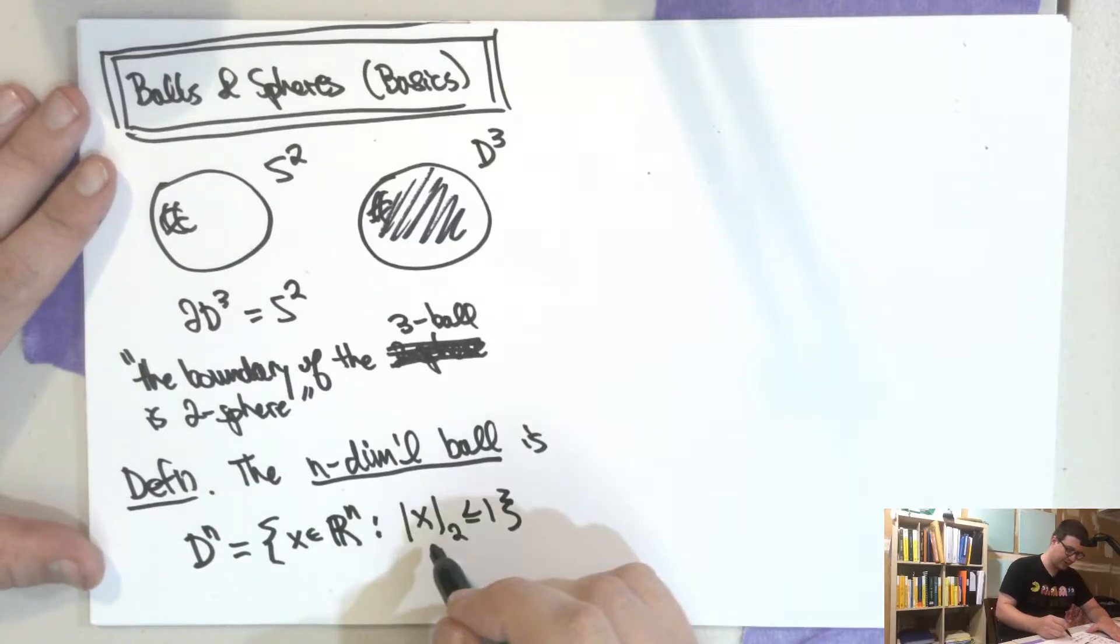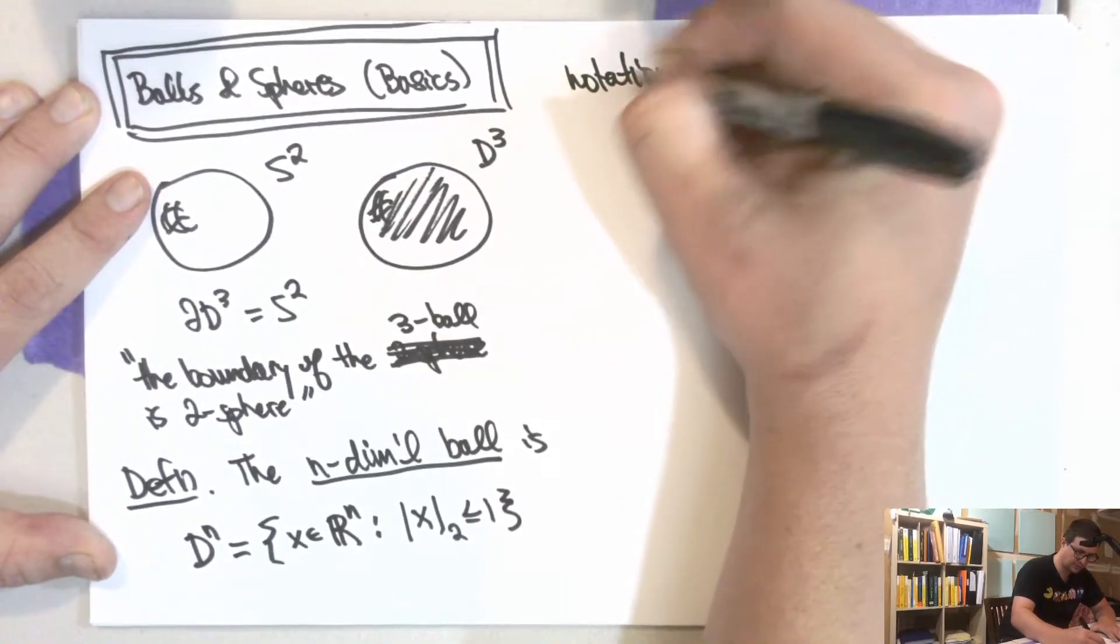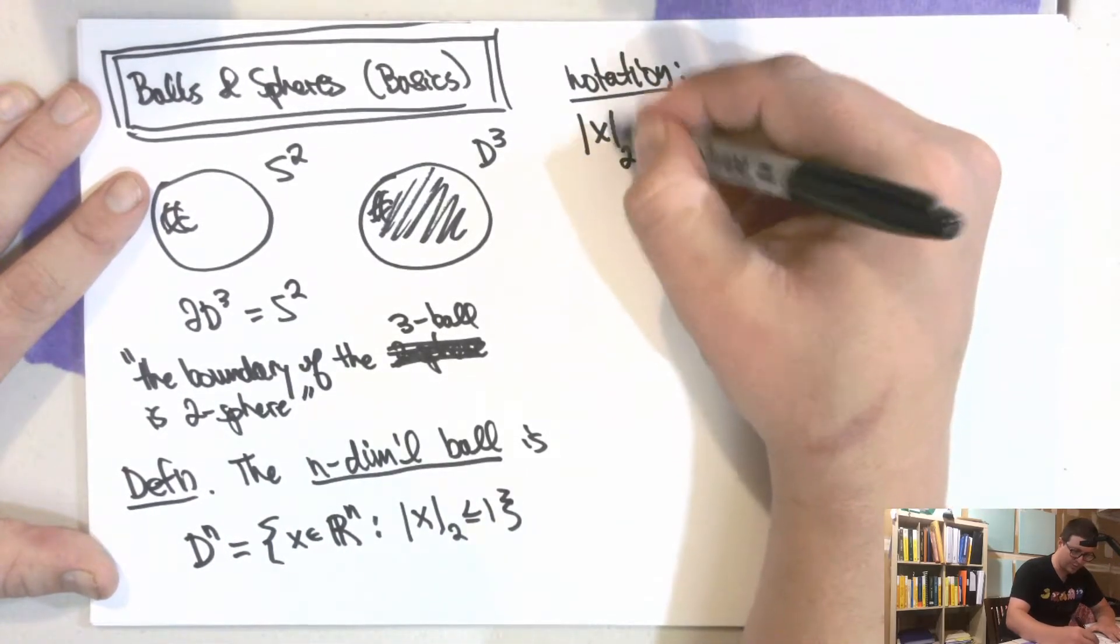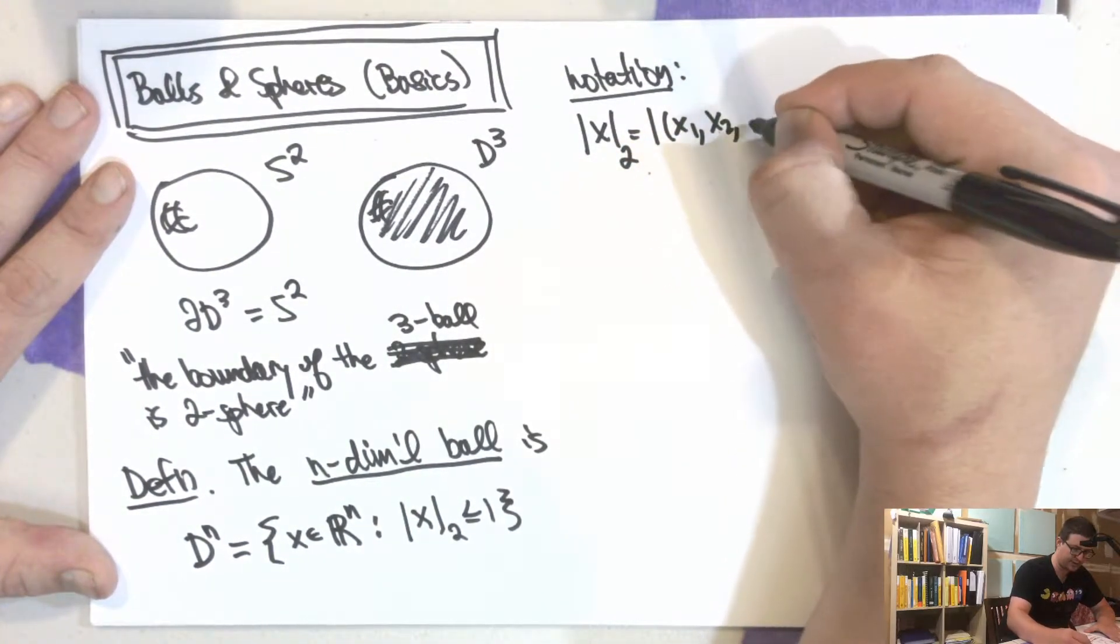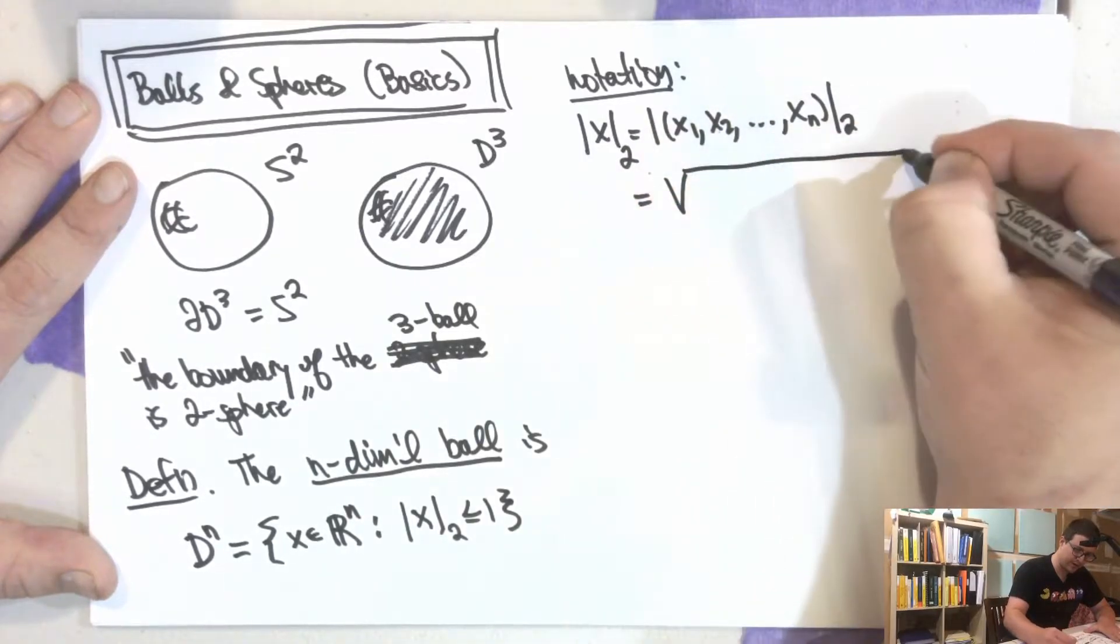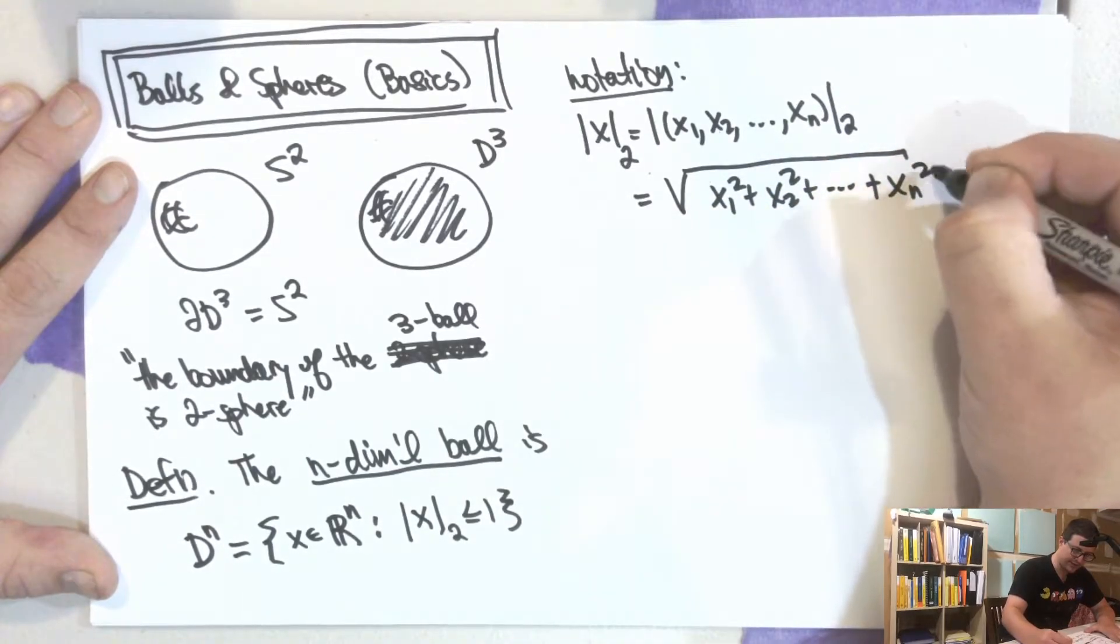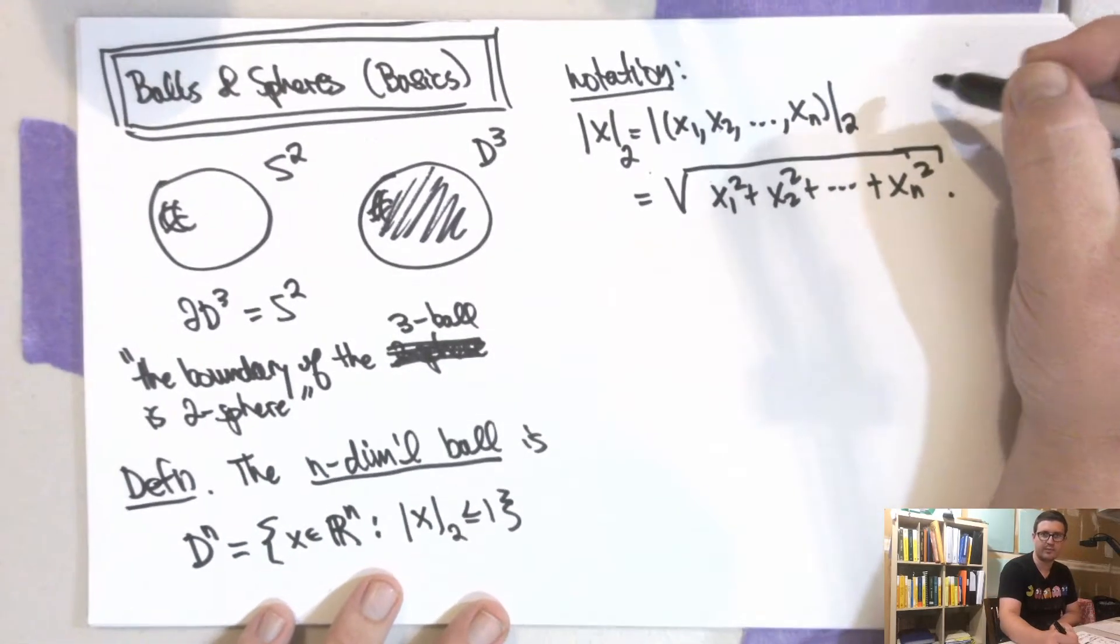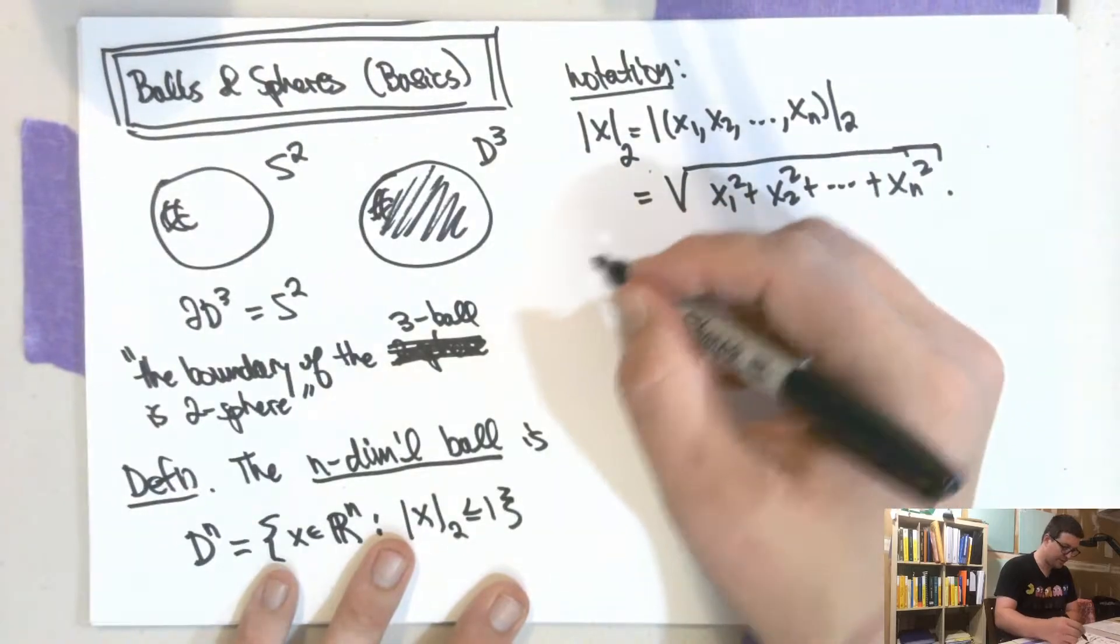So here, what is this? So here we're using some notation. So here x, this is, so I'm doing the two here. We'll omit this two for the time being, but I just want to be specific right now. So x₂, so this is n real numbers here. This is the usual Euclidean norm on ℝⁿ. It satisfies the properties of a metric.